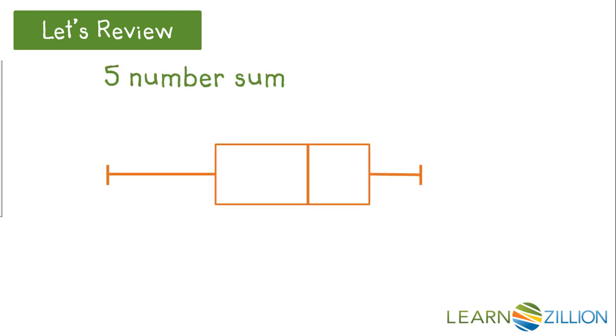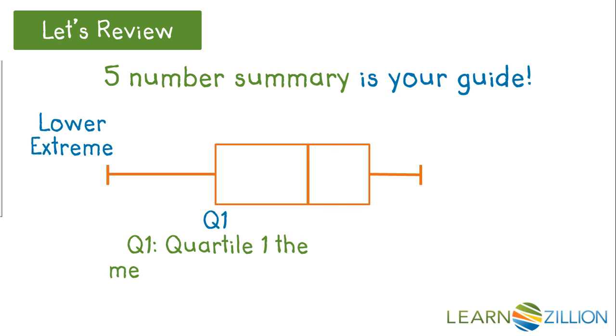Remember, the five number summary is your guide. The lower extreme is the smallest piece of data in the set. Quartile one, referred to as Q1, is the median or middle of the lower half of the data. It forms the left side of the box.